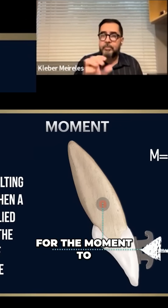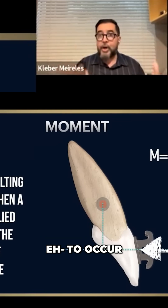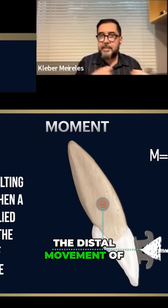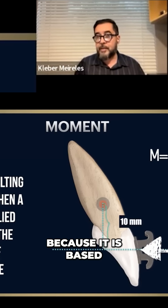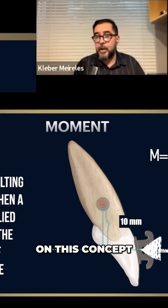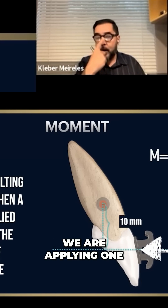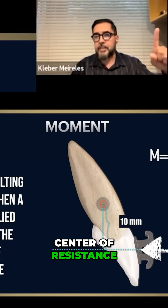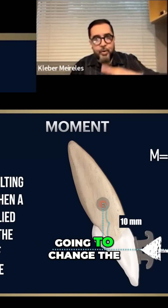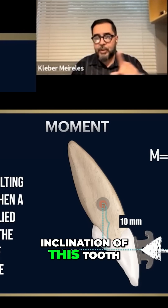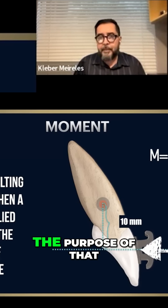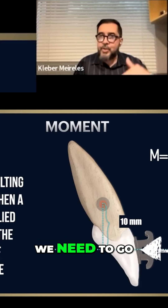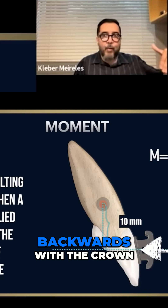But remember, for the moment to take place, we need to have the distal movement of the crown. Why is that? Because it is based on this concept: we are applying one force far from the center of resistance. And what is going to change the inclination of this tool, or the whole segment — which is the purpose of that chain — we need to go backwards with the crown.